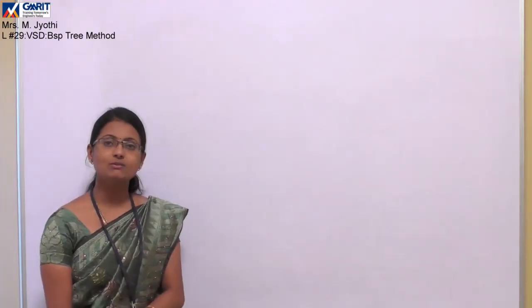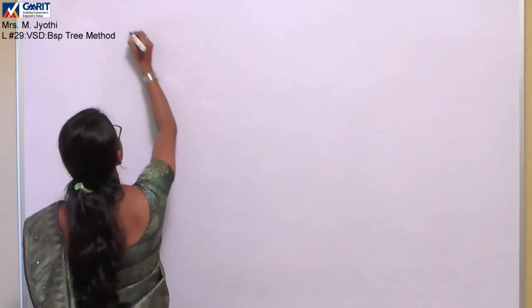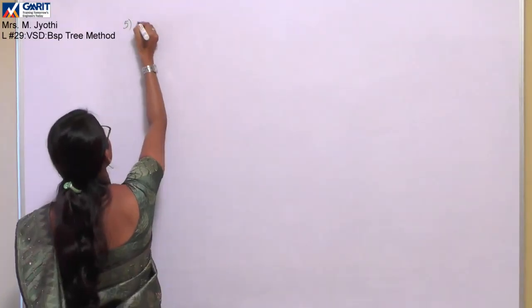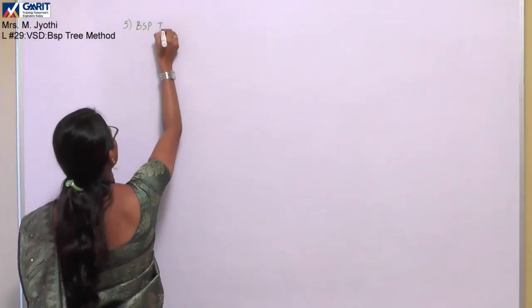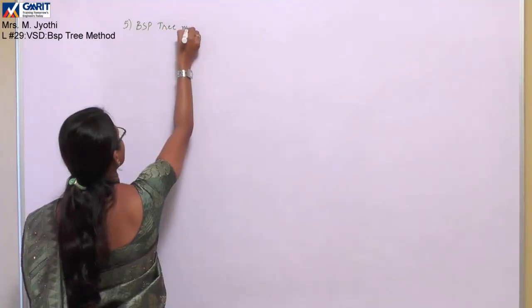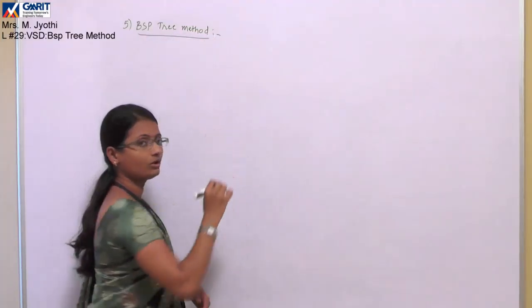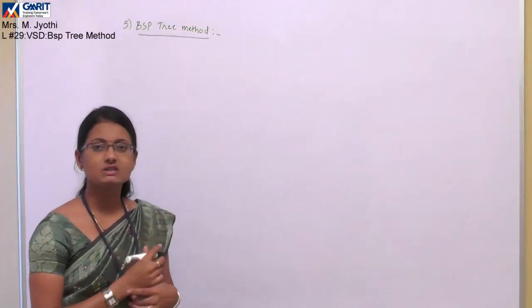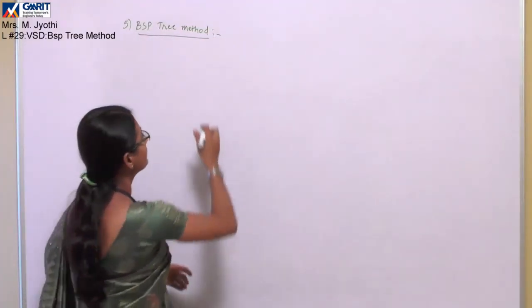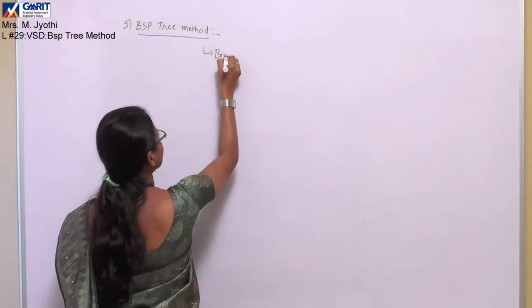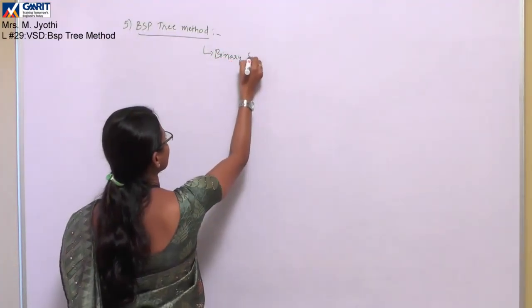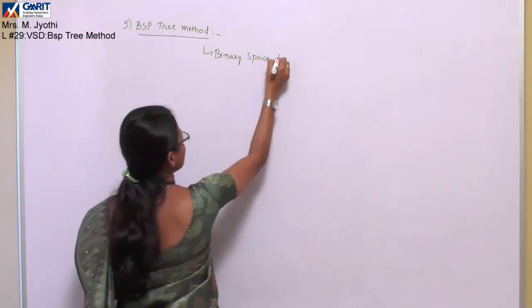So let's move on to our next concept: the binary space partitioning tree method. This is our fifth visible surface detection method — the BSP tree method. BSP stands for binary space partition.